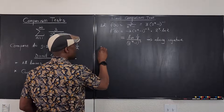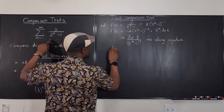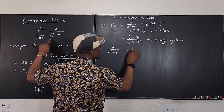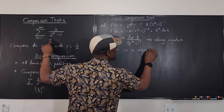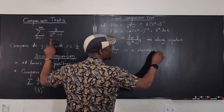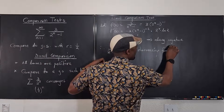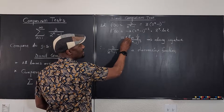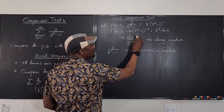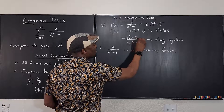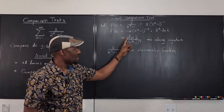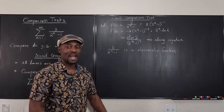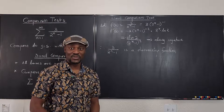This implies f'(x) is always negative, so we can say therefore 3 over (2^n minus 1) is a decreasing function. Alternatively, you can write it as negative 3 times ln(2) divided by (2^n minus 1)^2 — either way, you can see the expression is always negative, confirming it's decreasing.